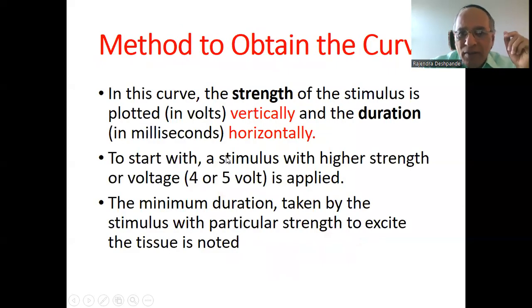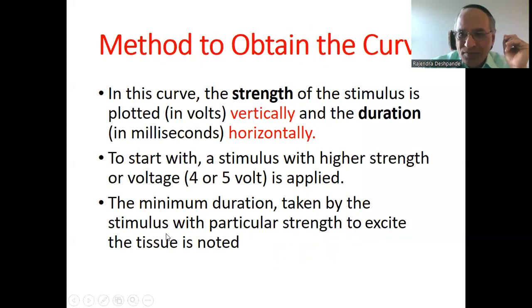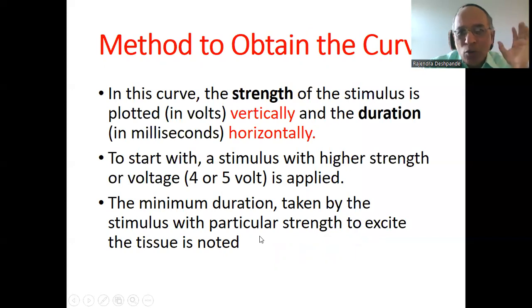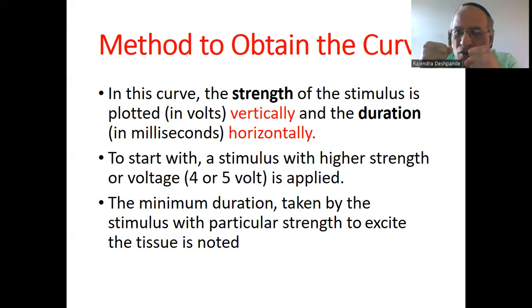To start with, a stimulus with higher strength or voltage — approximately 4 to 5 volts — is applied. This is the first step. The minimum duration taken by the stimulus with a particular strength to excite the tissue is noted. After the stimulus, how much time the muscle will take to get contracted is the duration, and how strong a stimulus we are giving is the strength.